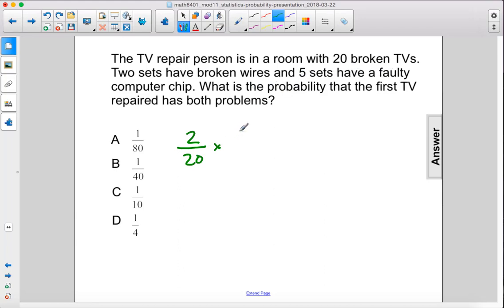This one has five favorable outcomes. Five different TVs have this problem out of 20. We can reduce this to 1 over 10, reduce this to 1 over 4, and multiply them together. We get 1 over 40. The answer is B.